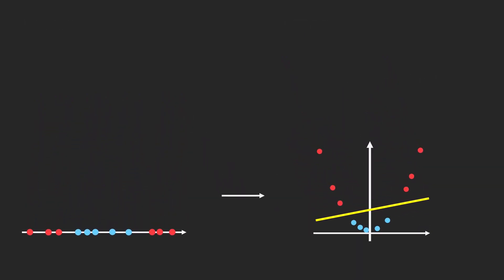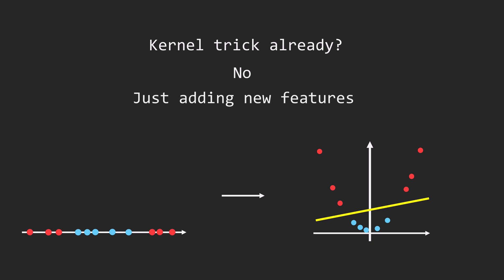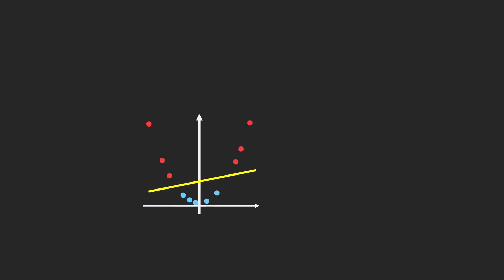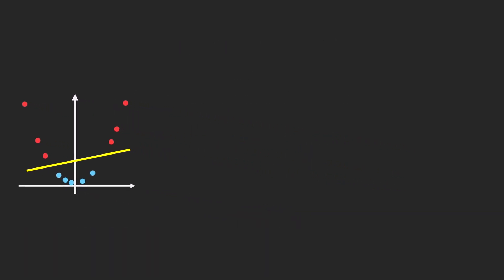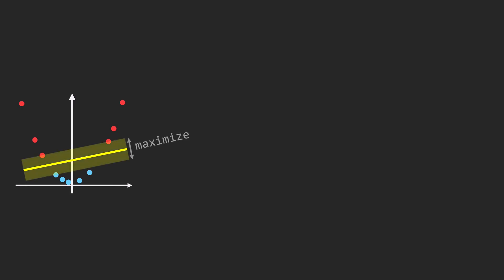So, is this the kernel trick already? This process of adding new features to our data is very powerful, but it's still not the kernel trick – it's just adding new features to our data. To truly understand the kernel trick, we must explore how SVM maximizes margins.